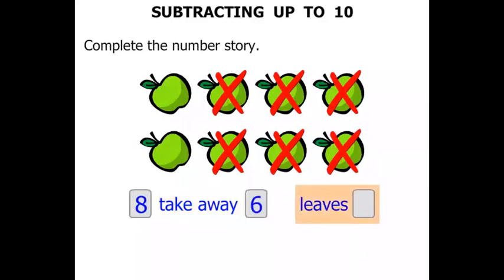And it leaves how many? 1, 2. So we write 2 there. So we've got 8 take away 6 leaves 2. That's the number story.